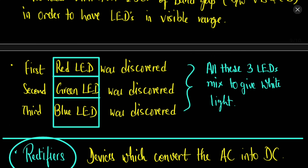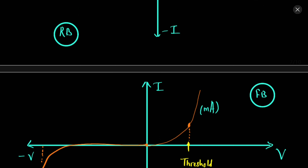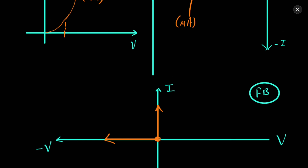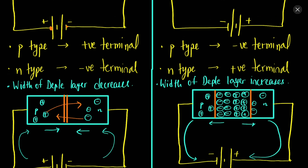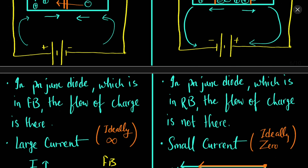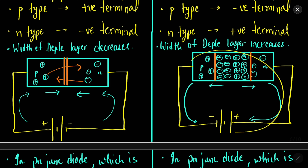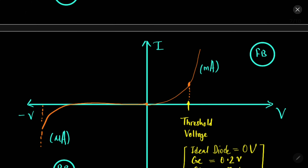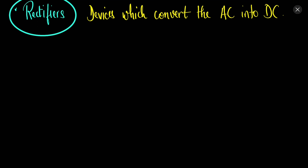How do we achieve this? We use the property of the p-n junction diode. We know that a p-n junction diode only allows current to flow in one direction — when it is in forward bias we have high current, and when we are in reverse bias the current is almost negligible. This property that the diode only allows current to flow in one direction will be used in the process of rectification.